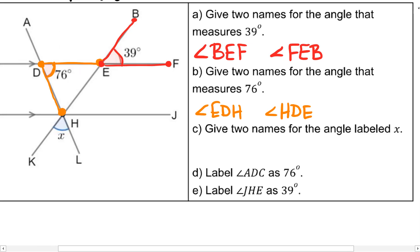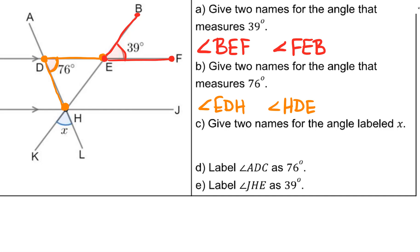Give two names for the angle labeled X. So this angle labeled X has a vertex at point H and then the other points we would use would be K and L located on the rays that make up this angle. So angle KHL or angle LHK as long as H is in the middle because it's the vertex. It's where the two rays meet up to make a point for the angle.